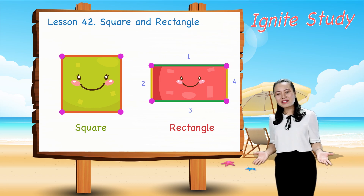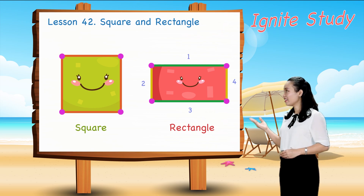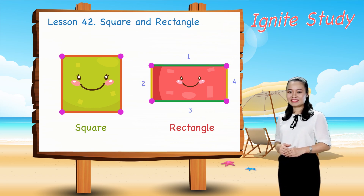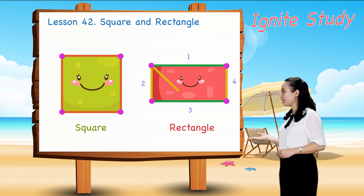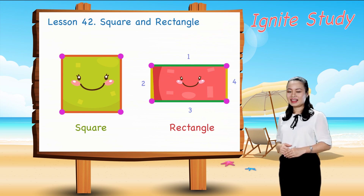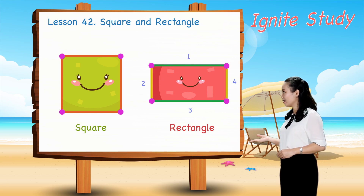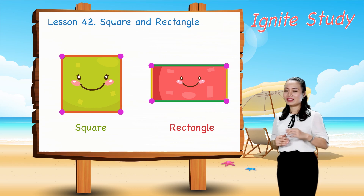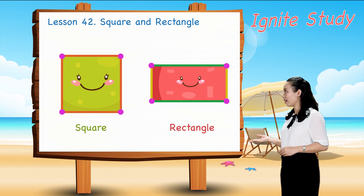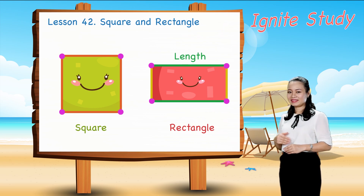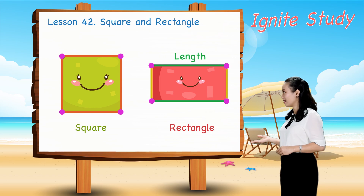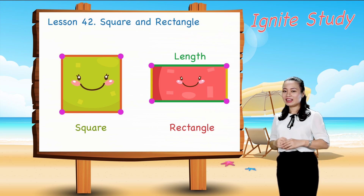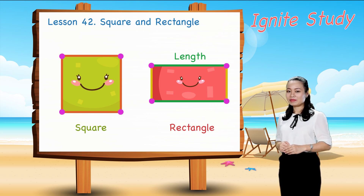However, these are adjacent sides — they are not equal. This side is longer, so it's called the length. This side is shorter, so it's called the width.